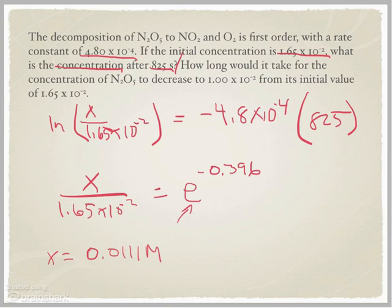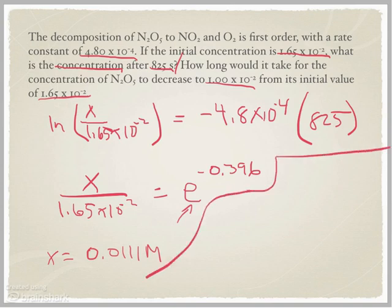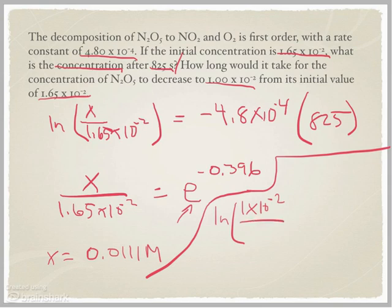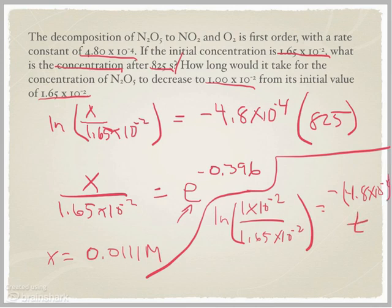The second question asks how long it would take for the concentration of N₂O₅ to decrease to a particular value. Treat this as a completely separate problem using the same equation. Set up: natural log of (1×10⁻² / 1.65×10⁻²) = negative 4.8×10⁻⁴ times T. Take the natural log on the left side, then divide by negative 4.8×10⁻⁴ to solve for T, and you get a time of 1043 seconds.